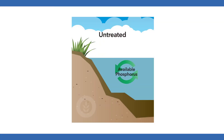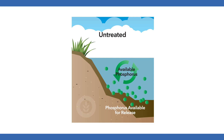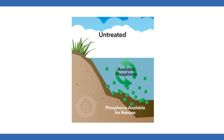We often see this pool of phosphorus built up in the sediments. It looks like organic muck on the bottom of your lake or pond. This can be an accumulation of phosphorus from many different sources, even leaves and grass clippings that build up in your pond through time.